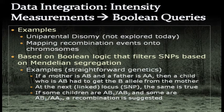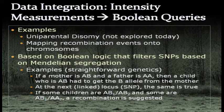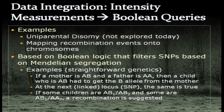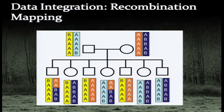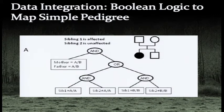Beyond intensity-based analyses, you can use Boolean tools — such as those in VarSifter and Genome Studio — to query whether a set of SNPs follows rules imposed by a genetic model. For example, if the mother is AB and the father is AA, a child who is AB must have gotten the B allele from the mother. At an adjacent locus, if some children are AA and some are AB at those two loci, a recombination is suggested. Setting up a Boolean filter to check for recombinations is fairly straightforward with a small family; larger families require more rules.